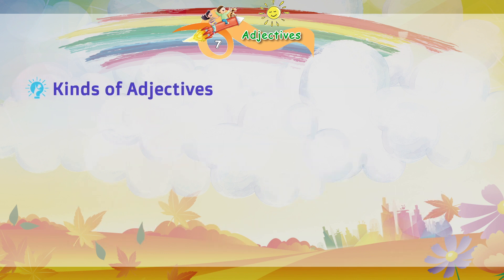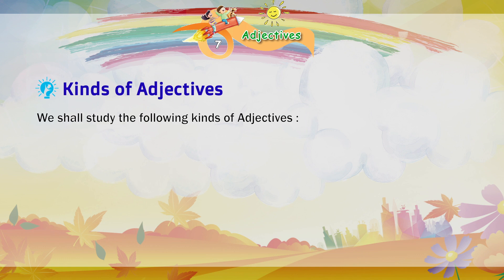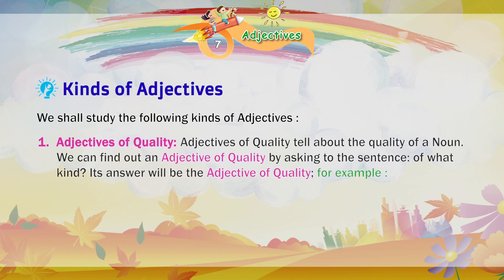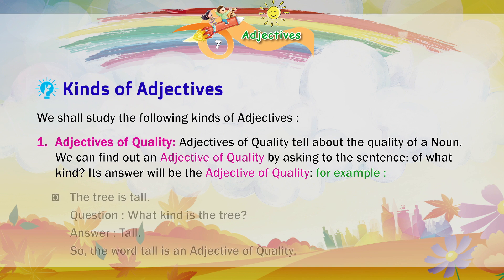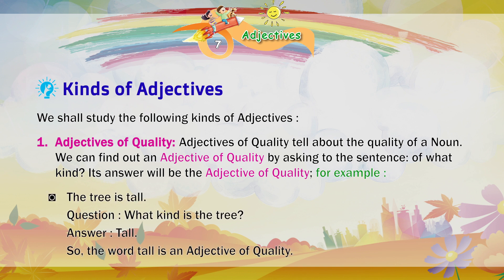Kinds of adjectives. We shall study the following kinds of adjectives. Adjectives of quality tell about the quality of a noun. We can find out an adjective of quality by asking the question 'of what kind?' Its answer will be the adjective of quality. For example: The tree is tall. Question — What kind is the tree? Answer — Tall. So the word 'tall' is an adjective of quality.